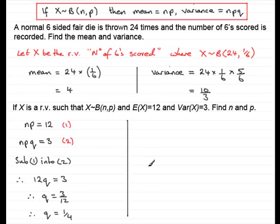Now that we have q, we can work out p, because since p equals 1 minus q, so then p must be equal to 1 minus q's value, a quarter. 1 minus a quarter is 3 quarters. Now that we have p, we can substitute this into number 1. So if we say sub in 1, we would have n times p, so that's n times 3 quarters, equals 12.